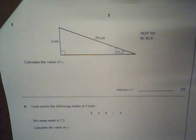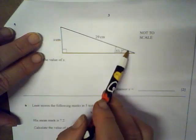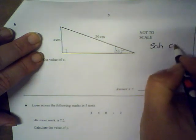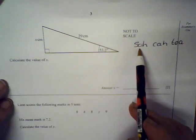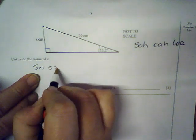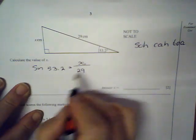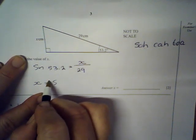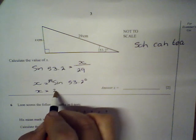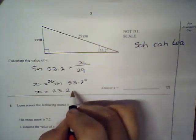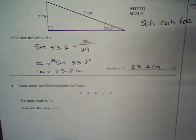Here we have a triangle with some sides and an angle, and we want to find the opposite side. I have the hypotenuse and want the opposite, so I use sine. Sine of 53.2° equals x over 29. Multiplying both sides by 29: x = 29 × sin(53.2°). Typing that into the calculator gives 23.2 centimeters.